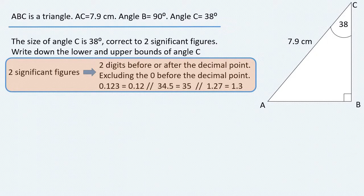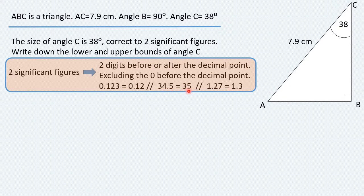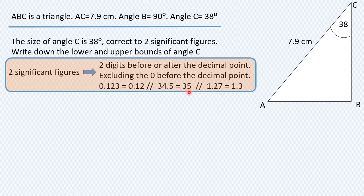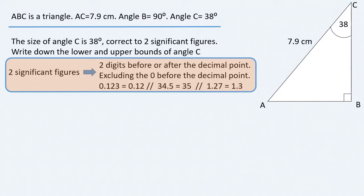In contrast to this, 34.5 rounds up to 35, correct to two significant figures. And finally, 1.27 rounds up to 1.3, correct to two significant figures.